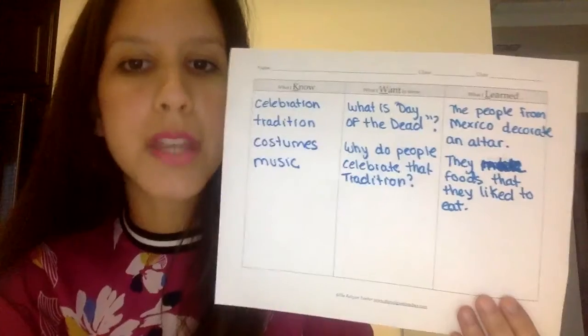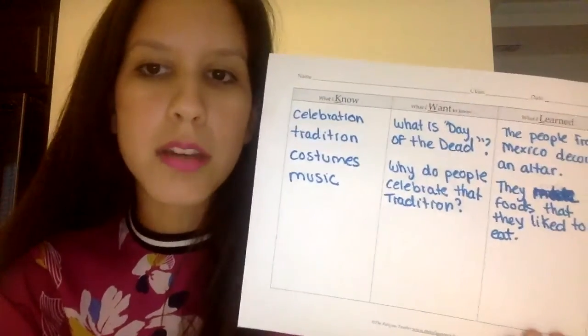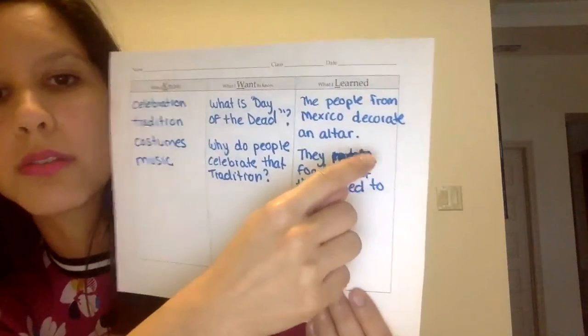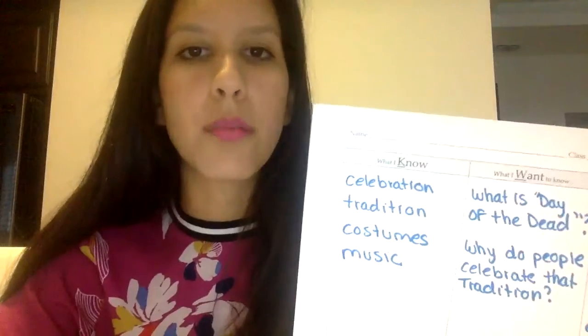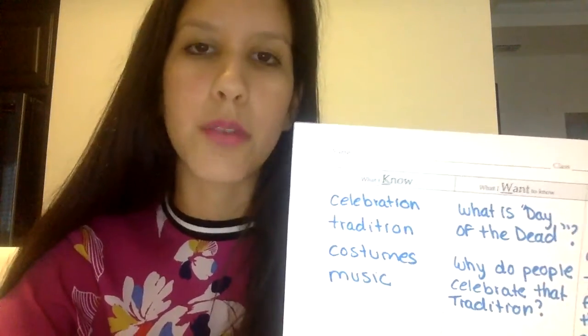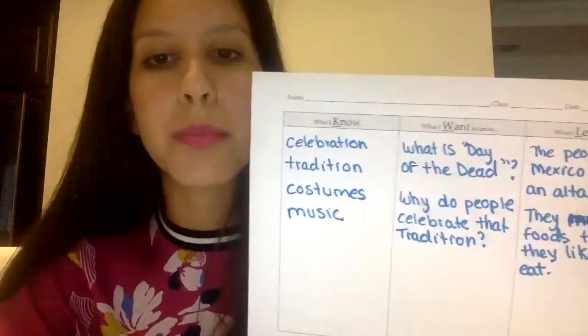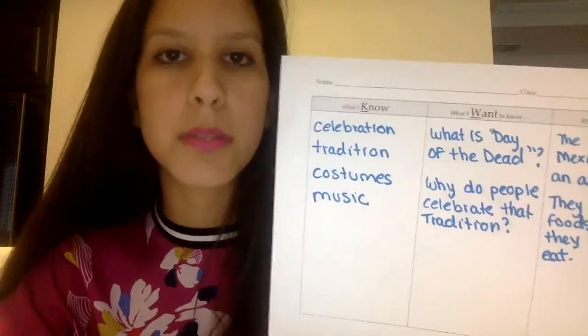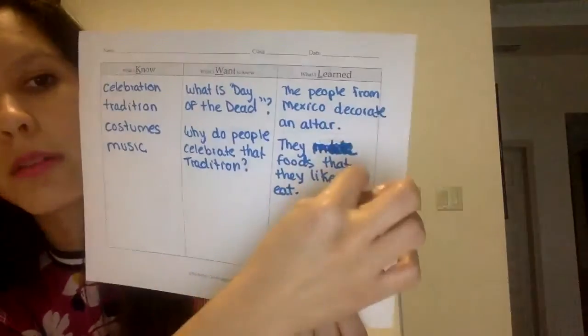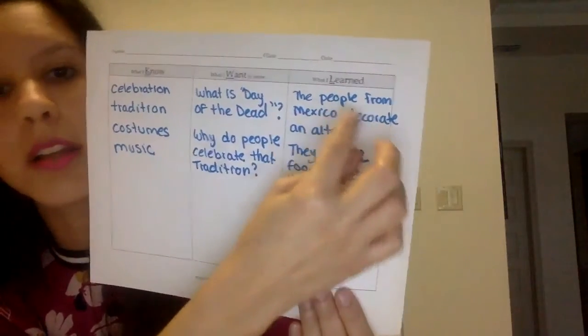When you have finished reading the story together, your child can complete the last section on the KWL chart, which is 'what I learned.' Your child can then write what has been learned on the topic. For example: the people in Mexico decorate an altar; the Day of the Dead is celebrated in November. All of those things that he learned from the story, he can write them right here under 'what I learned.'